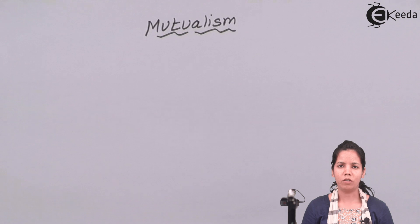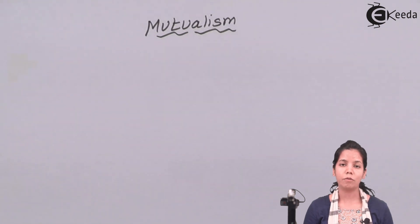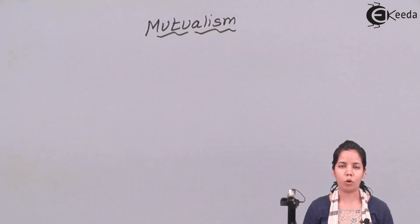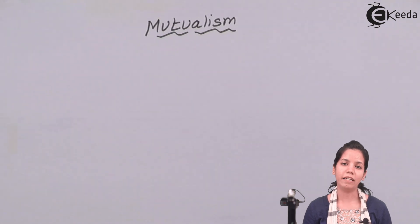When I say Mutualism, in normal layman terms we can say Mutualism means a mutual relationship between two different species. Two friends staying with each other, talking with each other — they both are going to help out each other. That's Mutualism in day-to-day life.